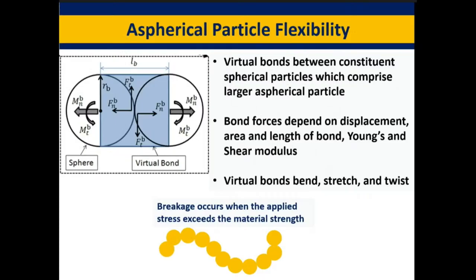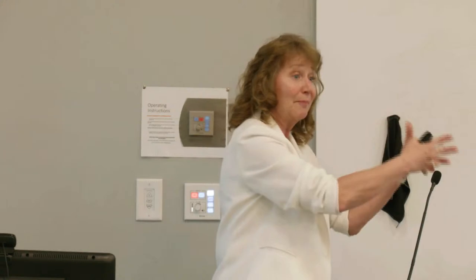For understanding particle behavior like biomass, we've done a lot of studies of biomass flow. We looked at the bond between particles — when you glue spheres together to form an aspherical particle, we let these bonds be flexible. So the constituent spheres forming a larger agglomerate particle can have bonds that bend, twist, and stretch, all owing to forces acting on them. The bending and twisting is related to a material parameter: the Young's modulus and the shear modulus for that material. There are no tuning parameters in these kinds of models.